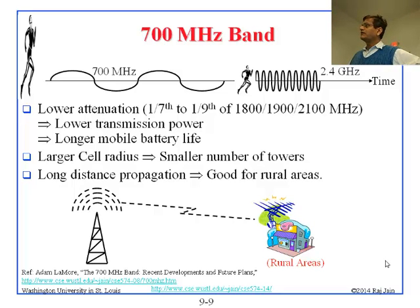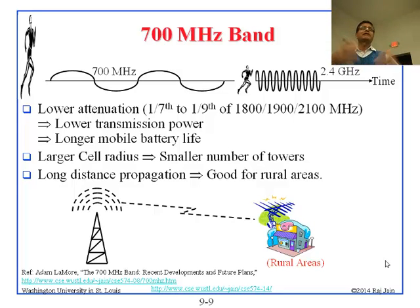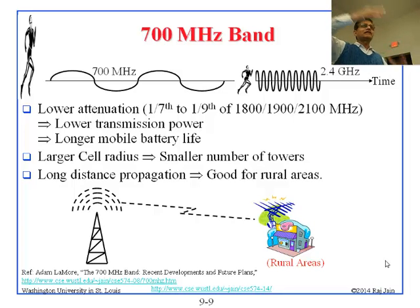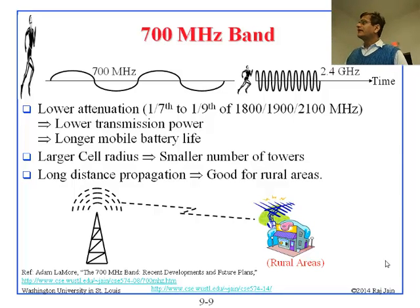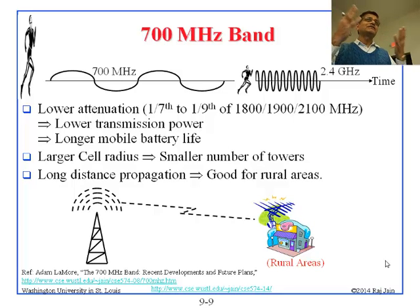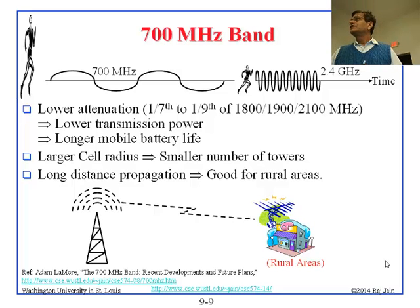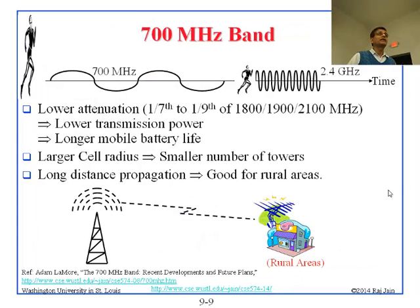Lower attenuation also means lower transmission power and lower battery consumption. If you don't want to go nine times further, you can just reduce the power — battery life goes up. Larger cell radius means a smaller number of towers; you can place towers miles apart at 700 MHz. Longer distance propagation is good for rural areas — you can afford to provide cellular and internet service to areas that have not been served so far. So 700 MHz is a very good band, and people are willing to pay a lot of money for it.